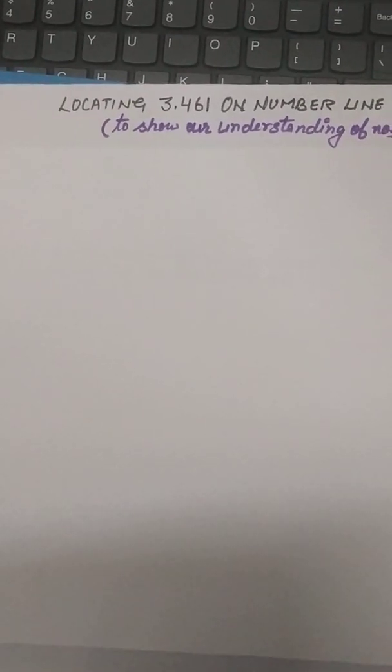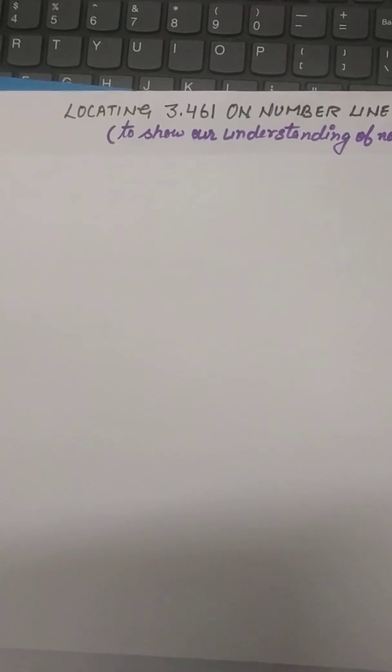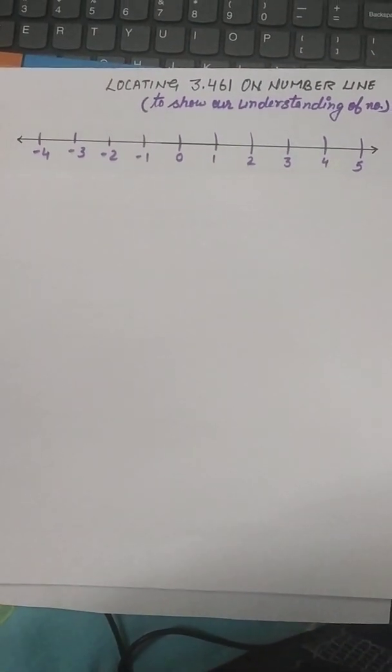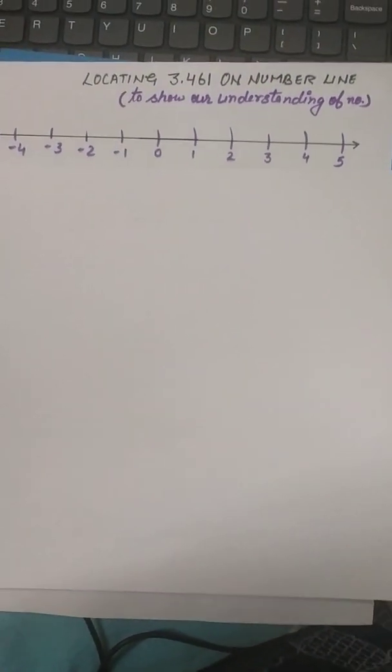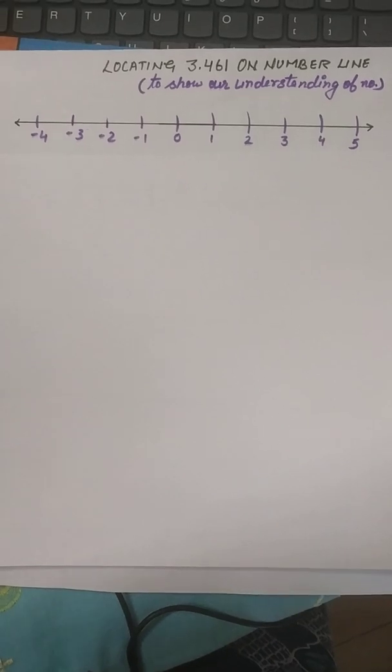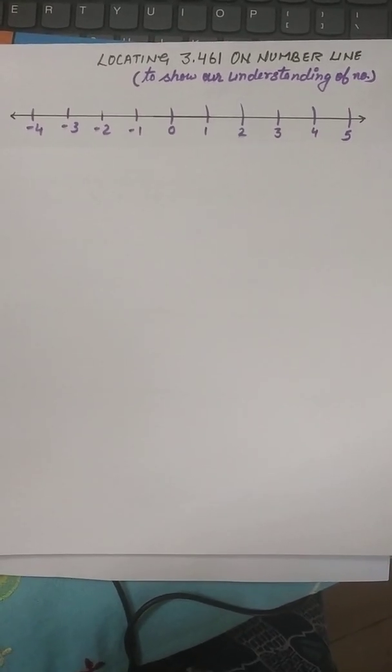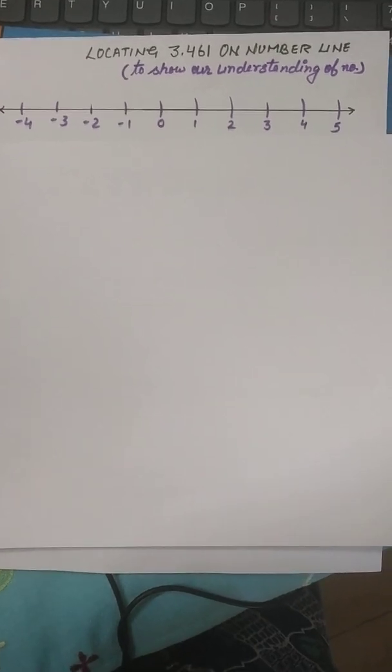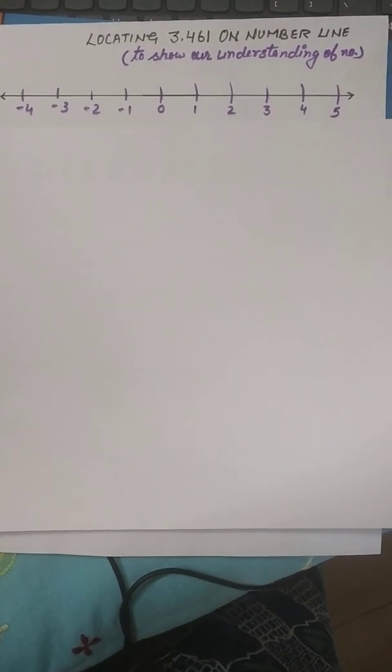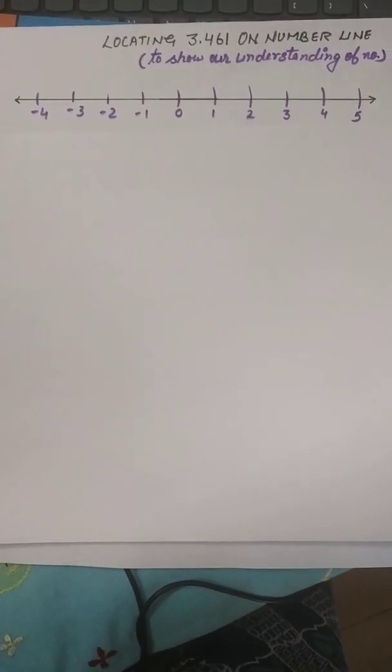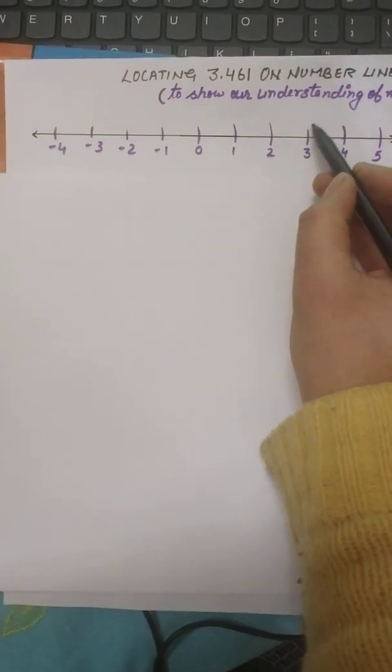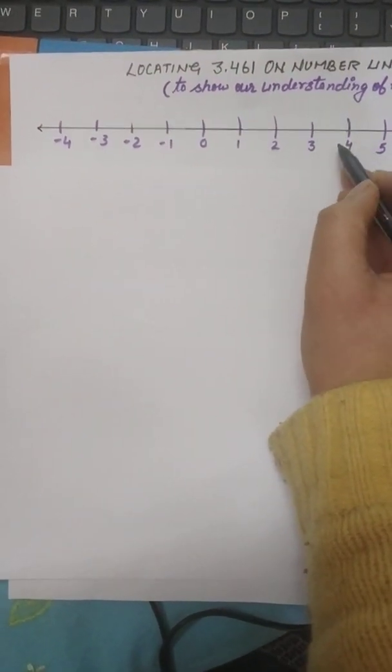So if you have to locate 3.461 on the number line, first we'll make our normal number line like this. So this is our normal number line. Now we know, I suppose we know, 3.461, it's a number, it's 3 full and some part. 3 full and 4th is not full. It's 461 parts out of 1000. So obviously it's 3 full and something. So it lies between 3 and 4. If we have to locate this number, we have to magnify this area. We have to go inside this.